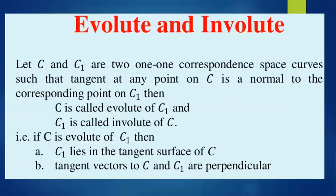More precisely, let C and C1 be two curves in one-to-one correspondence such that the tangent at any point on C is normal to the corresponding point on C1. Then C is called the evolute of C1 and C1 is called the involute of C. That is, C1 lies in the tangent surface of C, and the tangent vectors to C and C1 are perpendicular.